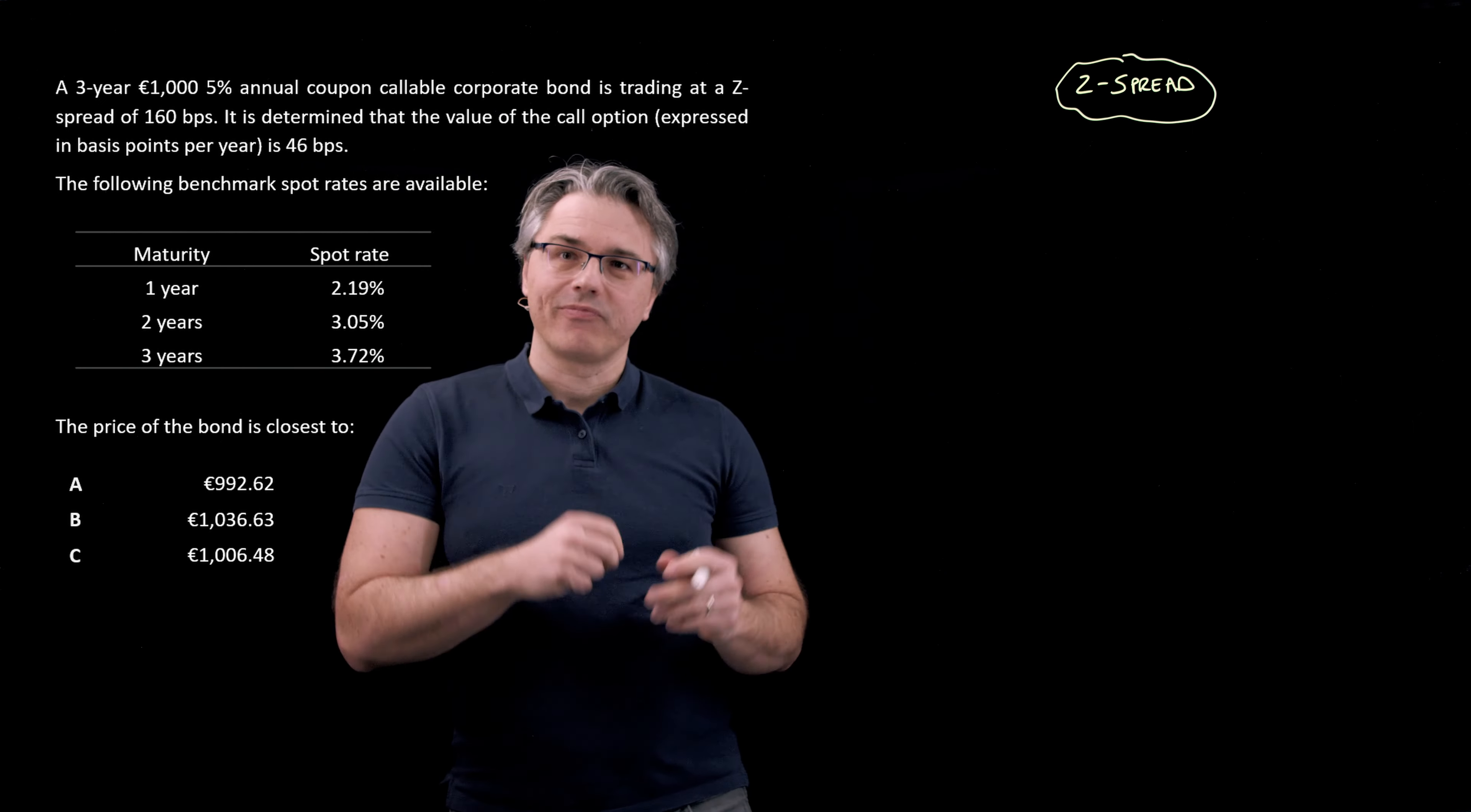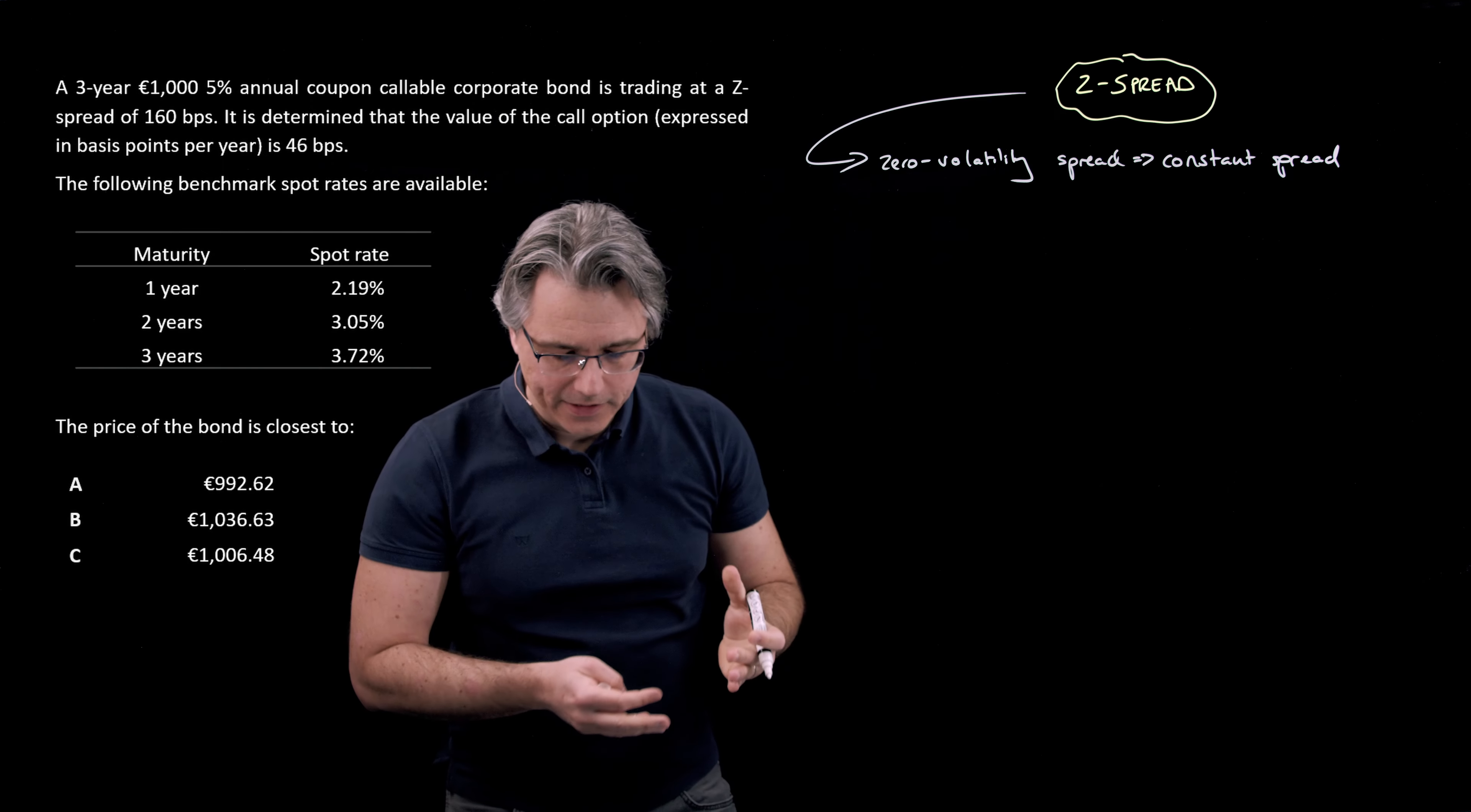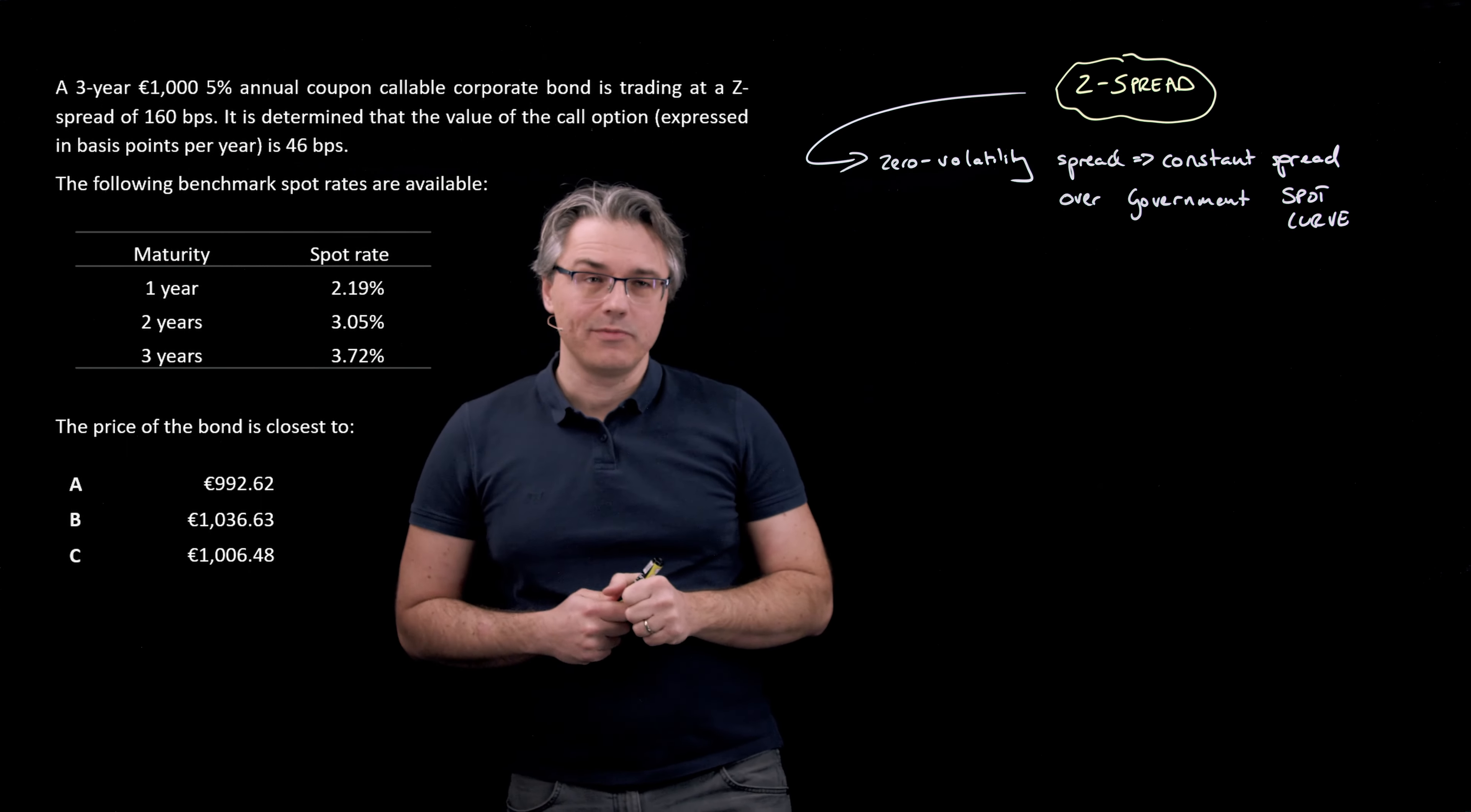Let me tell you how we're going to utilize the Z-spread or the Z-spread as some people call it. First of all, the Z-spread or the zero volatility spread is a constant spread over the government spot curve. What do we mean actually by this?